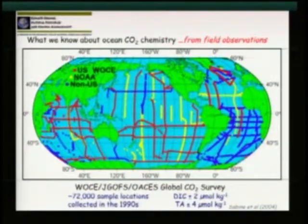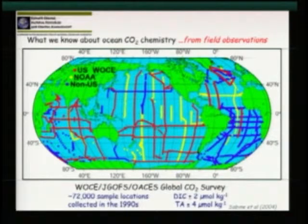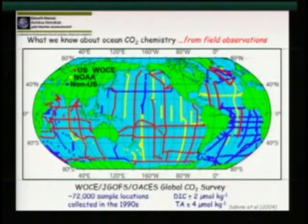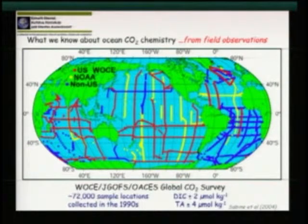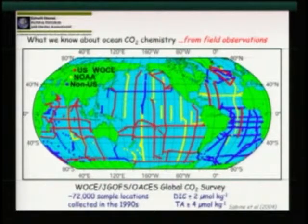We have conducted a complete survey of the carbon system in the ocean in the 1990s and already determined the amount of anthropogenic CO2 in the ocean. This was 99 cruises conducted by 8 different countries. We brought together all the data in my laboratory, corrected all the data, and provided a unique data set with a high degree of precision and accuracy — over 72,000 samples. It took us five years to develop this data set.